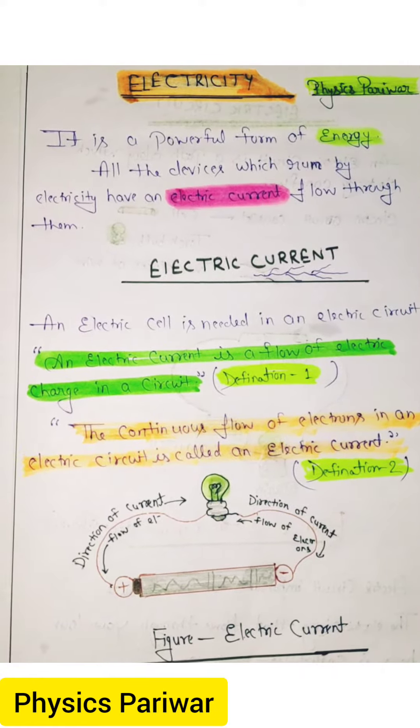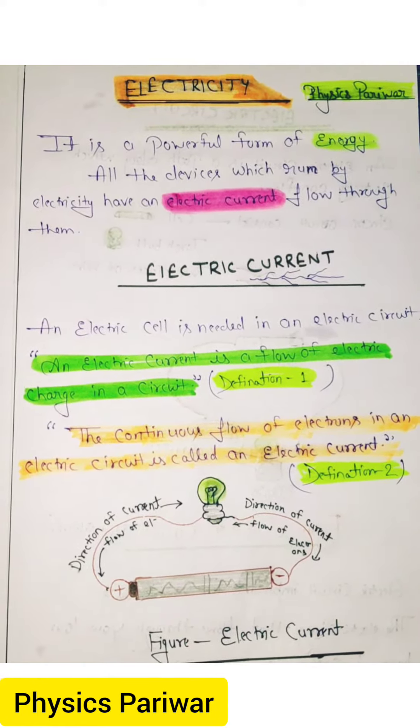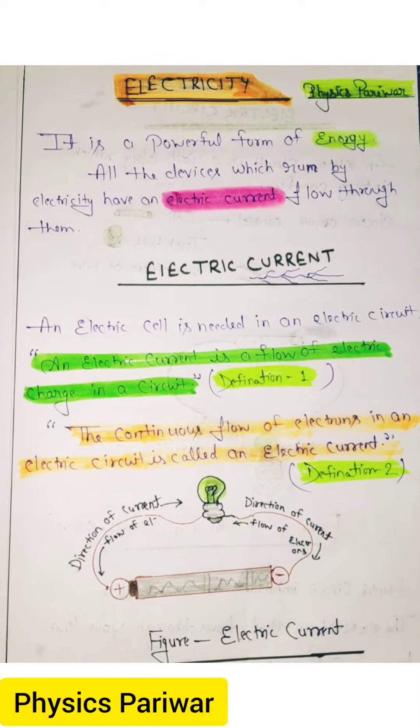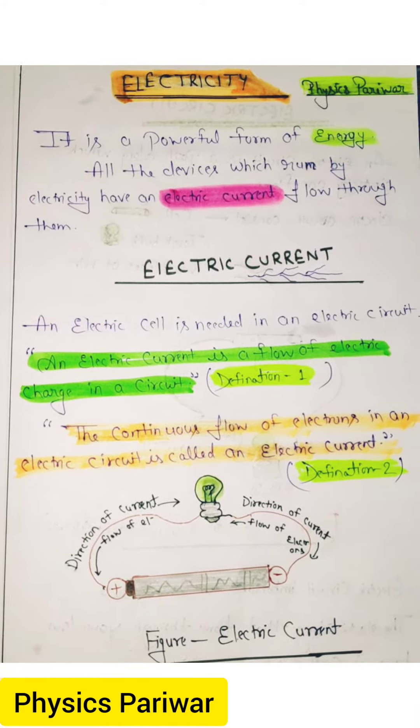Another definition of electric current: the continuous flow of electrons in an electric circuit is called electric current.